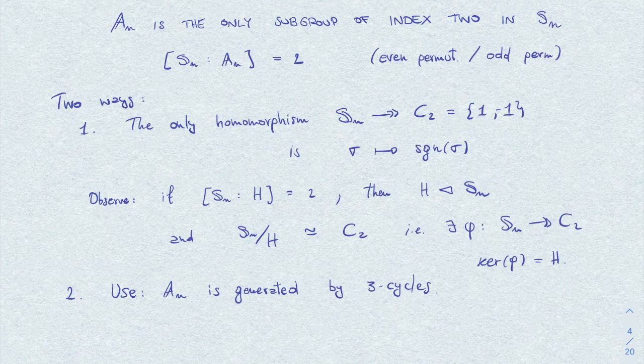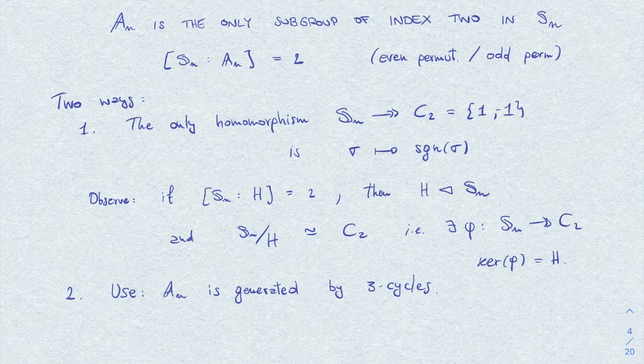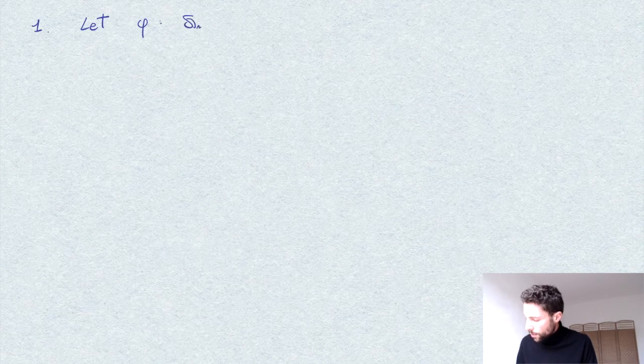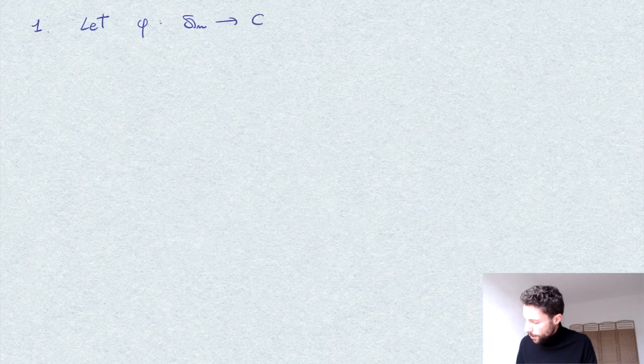So of course this makes sense only for n at least 3, but also our statement is trivial for n equals 2. So well, let's proceed with the first way. Here we suppose that phi is some surjective morphism from S_n to C_2.